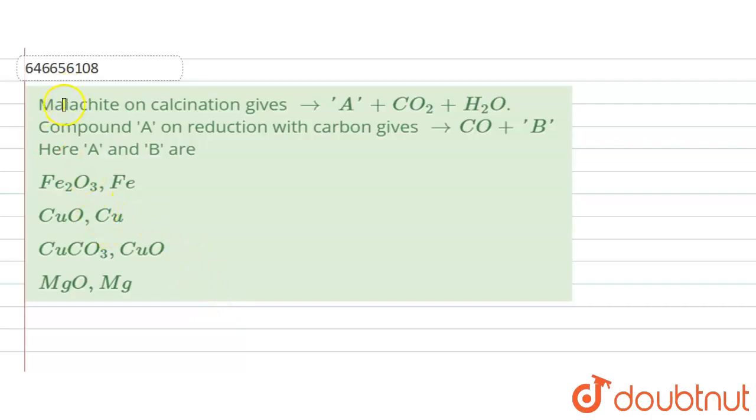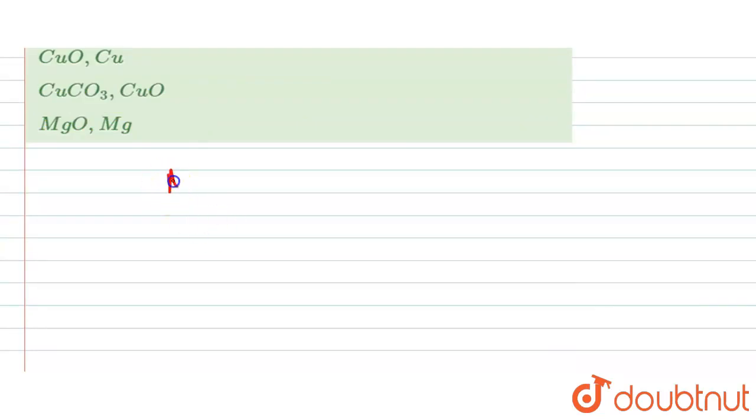So here the question is: malachite on calcination gives this reaction, and compound A on reduction with carbon gives CO plus B. We have to identify A and B.